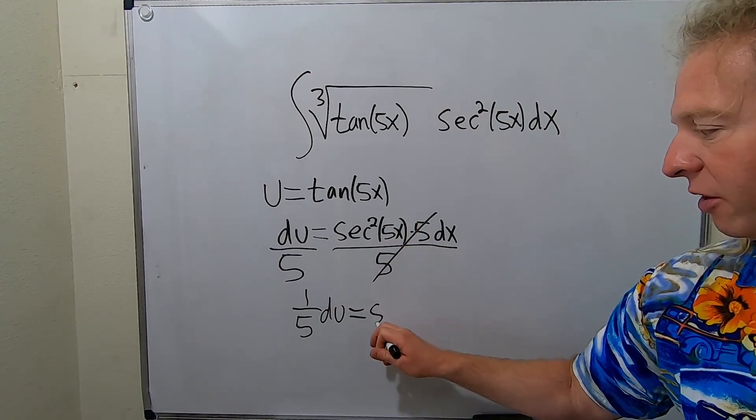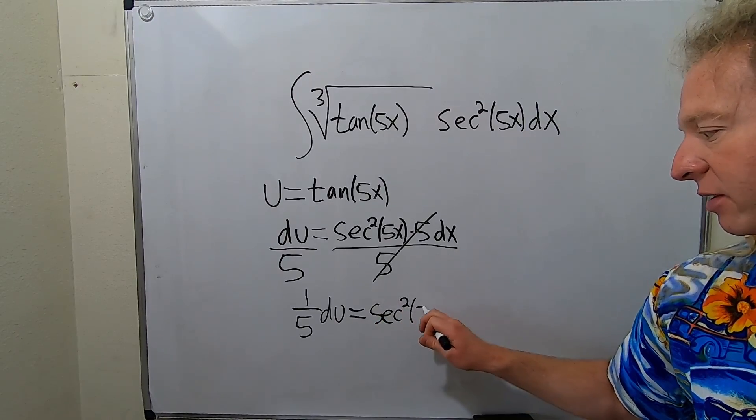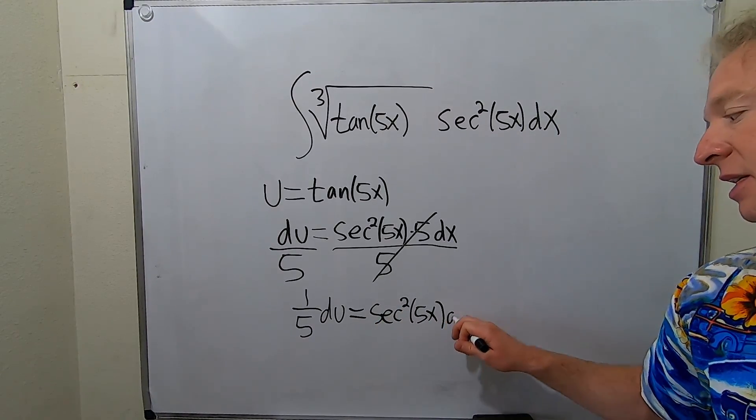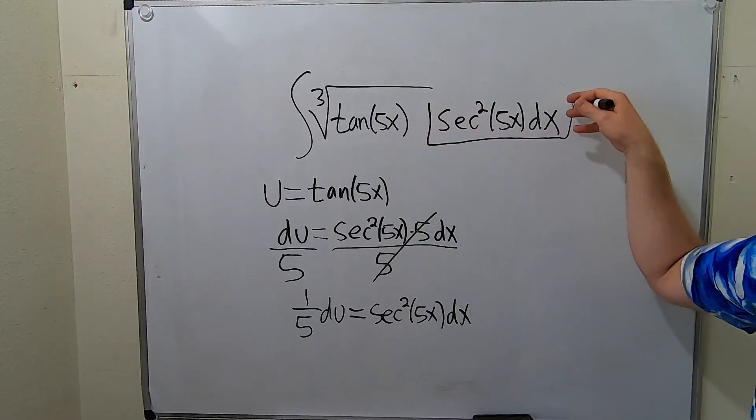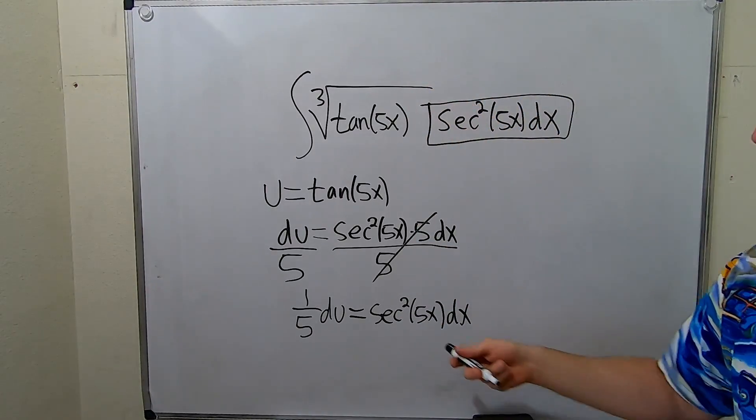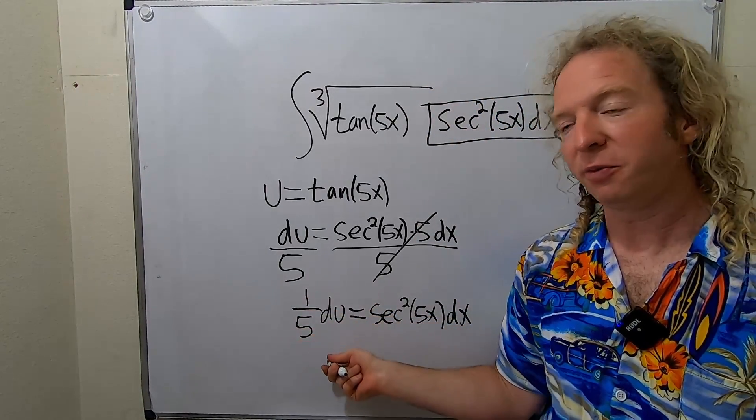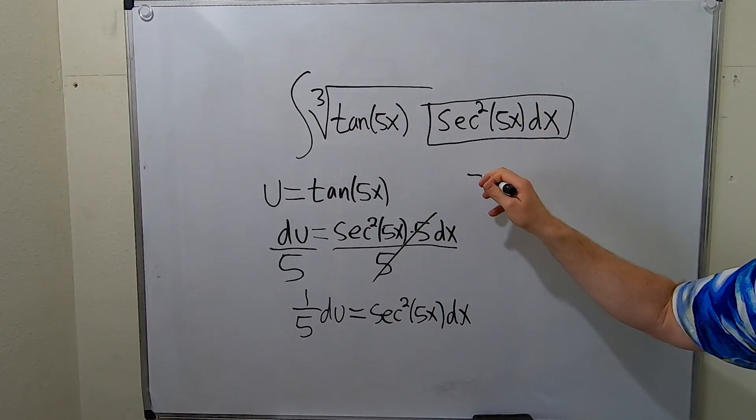And we're left with this beautiful piece here: secant squared of 5x, and then dx. Really beautiful stuff. So this works out perfectly. This thing here in a box is simply 1 fifth du. So now we can make our substitution in a very clean way.